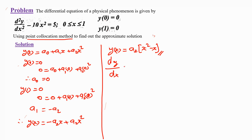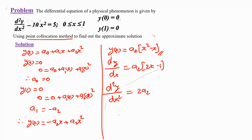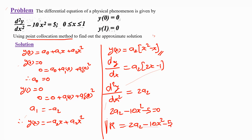Taking dy/dx of y(x) = a₂(x² − x) gives dy/dx = a₂(2x − 1). Taking the second derivative gives d²y/dx² = 2a₂. Therefore the differential equation becomes: 2a₂ − 10x² − 5 = 0. This expression, 2a₂ − 10x² − 5, is called the residual — it is the simplified form of the equation after reducing the differential term.